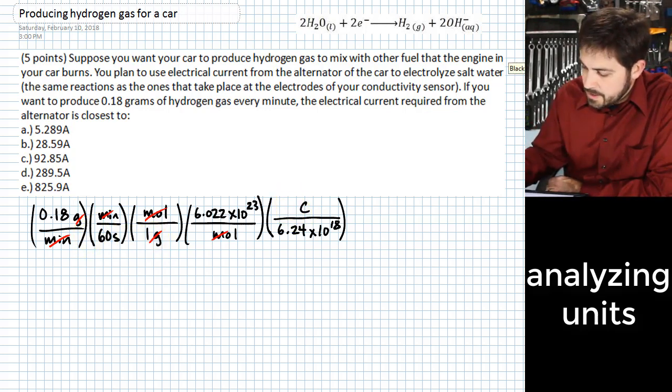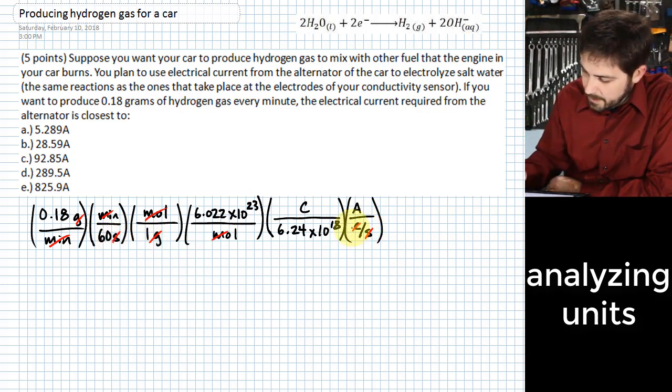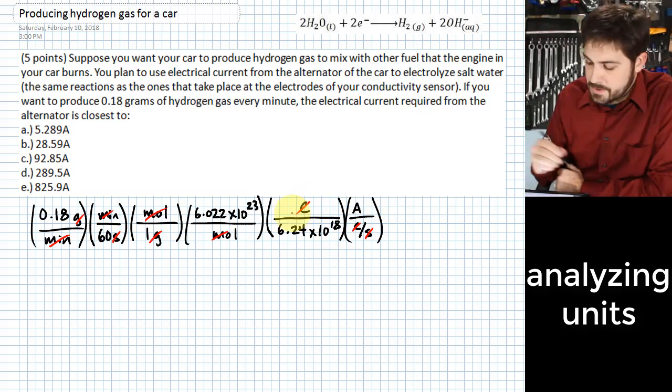And what we will find is that our units end up being coulombs per second. Well, that is just an ampere. We could even put down here ampere over coulomb per second. And if we do that, then that allows us to cancel the seconds and the coulombs. And that just gives us amperes.